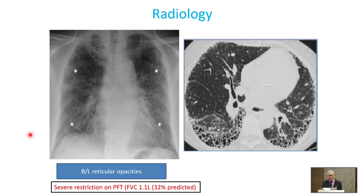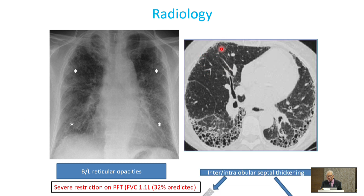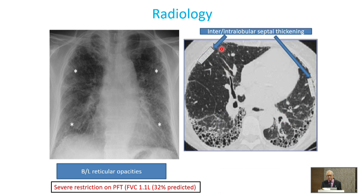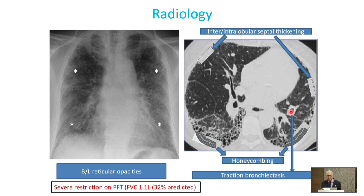Looking at the HRCT — which will be described in detail by the radiology faculty — you see reticular shadows, traction bronchiectasis, and honeycombing. These are a few key signs, but you will see much more with radiology. When you see a patient with ILD, what are the facets and how do you go about it?